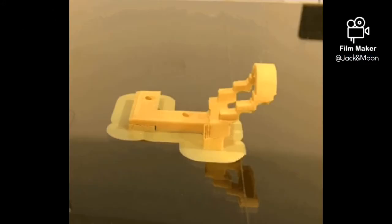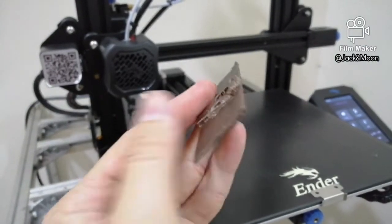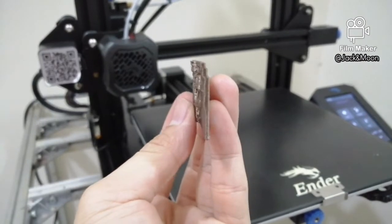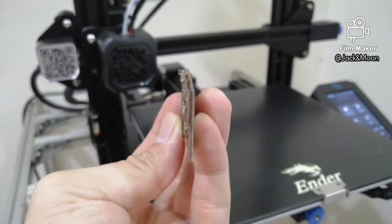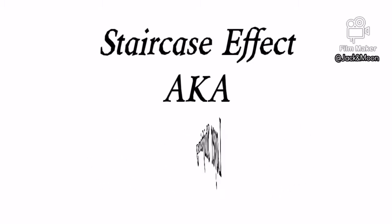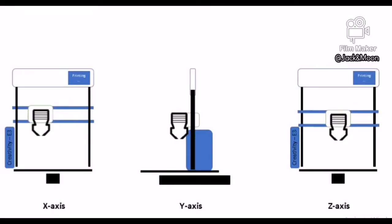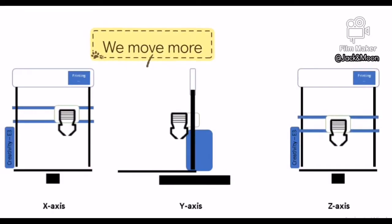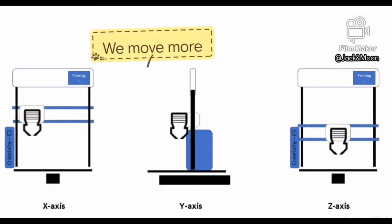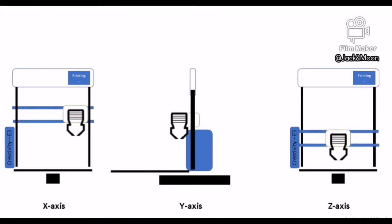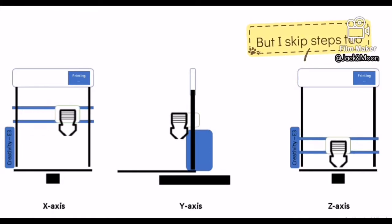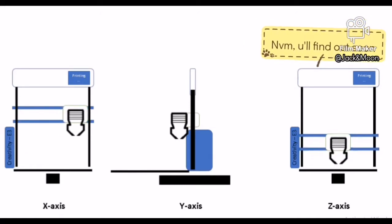In this video we will be talking about the staircase effect on your printed parts. The main reason for this failure is due to the skipping steps of your motor drivers — this problem is mainly known as layer shift. Most of the time this happens on the X and Y axes, because X and Y move a lot more compared to the Z axis. There are still some situations where the Z axis motor skips steps too, but that is another problem called the bending effect, which we will most probably cover in another video.